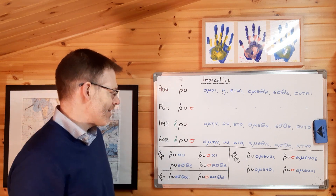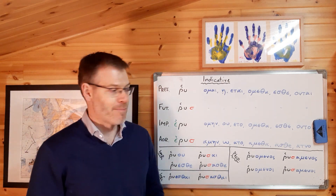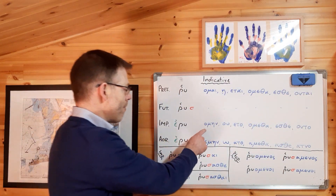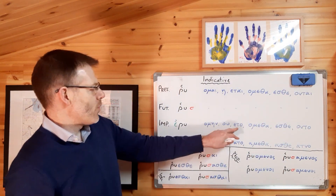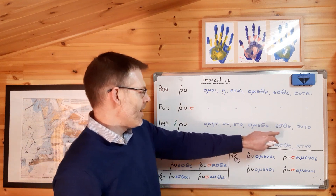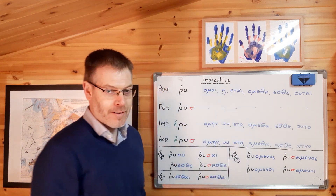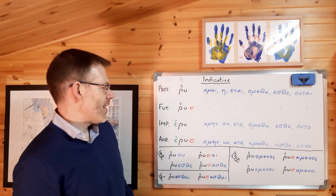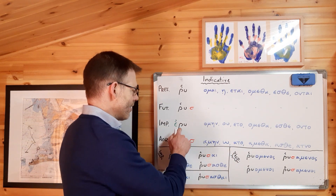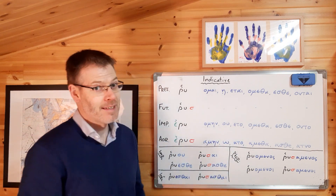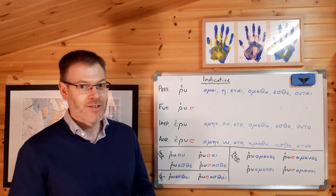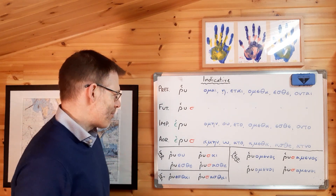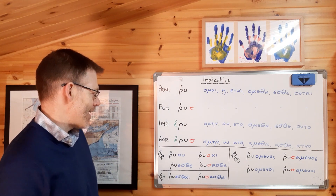On to the imperfect. Again, you've got some other endings to learn here: eruomen, eruou, erueto, eruometha, eruesthe, eruonto. Epsilon augment, stem, and then these are the endings. Nothing much we can do about that — just got to learn them, chant them, drive the cat crazy until your family is blue in the face.